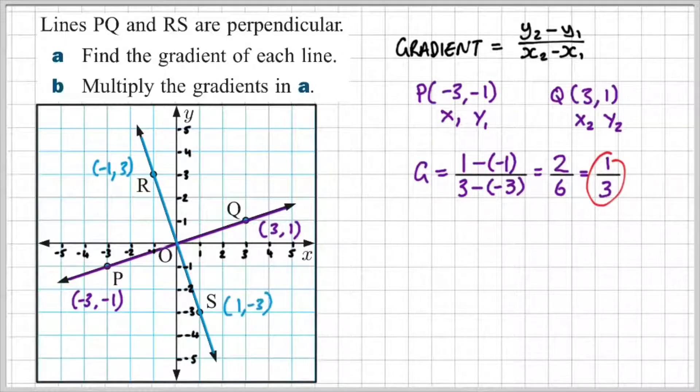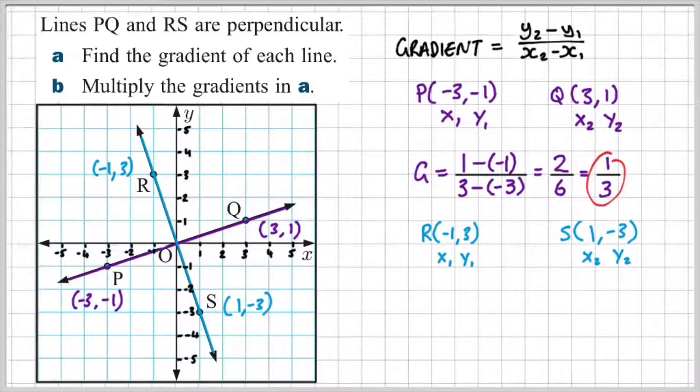Now if we look at line RS, we have two coordinates, minus one comma three and one comma minus three. Again, if I label those respectively, I can substitute those values into the gradient formula.